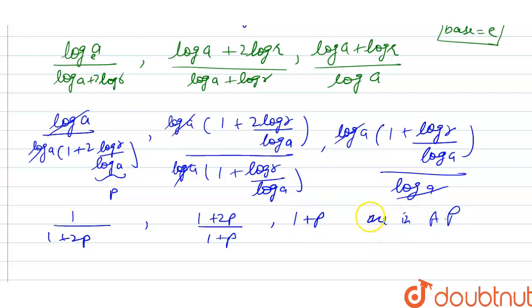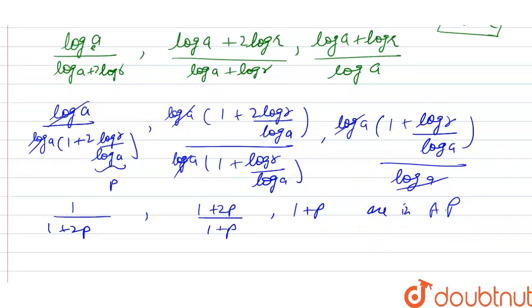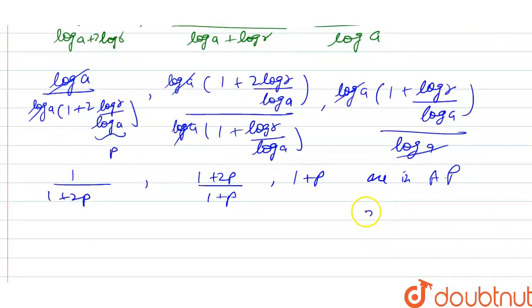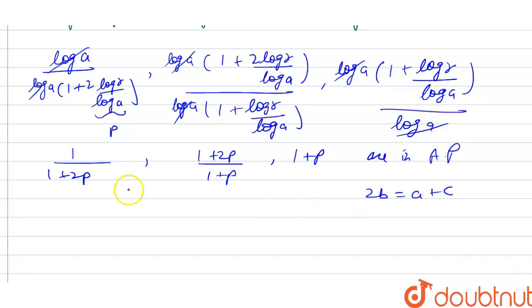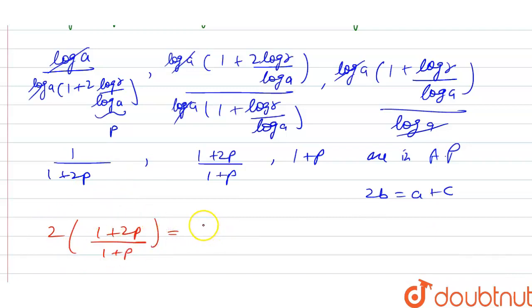Since three terms are in AP, we have 2B = A + C. So 2 × (1 + 2P)/(1 + P) = 1/(1 + 2P) + 1/(1 + P), where (1 + 2P)/(1 + P) is the middle term.